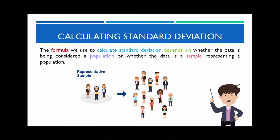Before we proceed, I want to briefly mention that the formula we use to calculate standard deviation depends on whether the data is considered a population or whether it's a sample that represents the population. In our very first lesson on statistics, we looked at the differences between samples and population — a sample is a small proportion from the population, and ideally you want it to be representative of the population by having diverse traits.